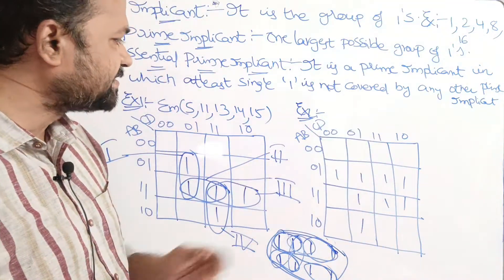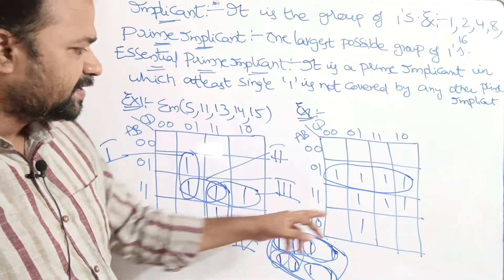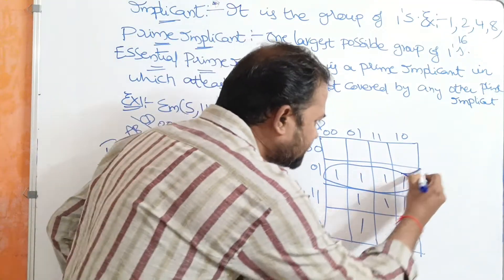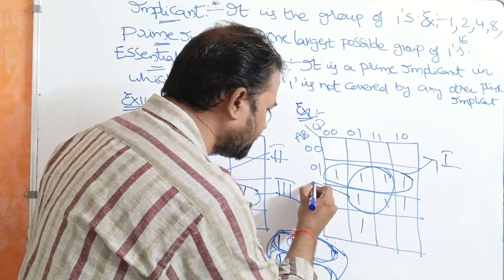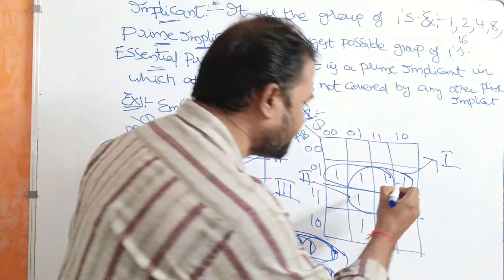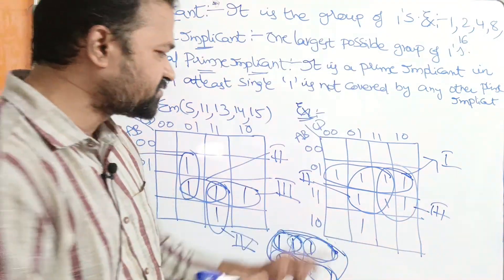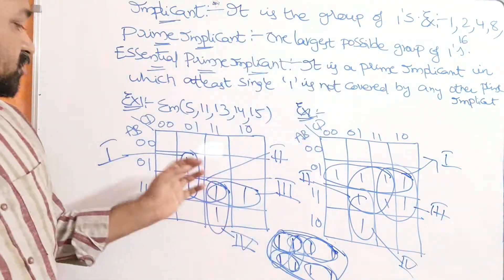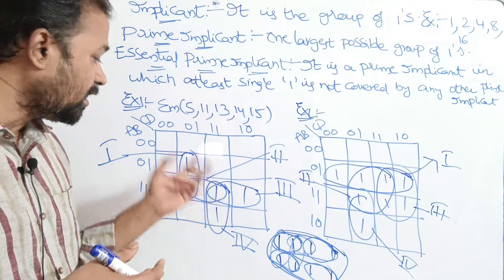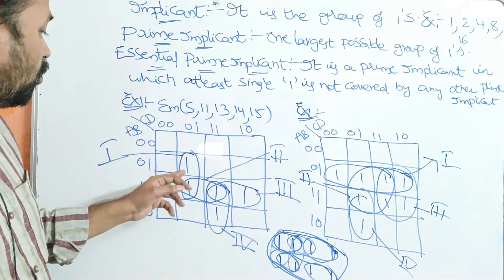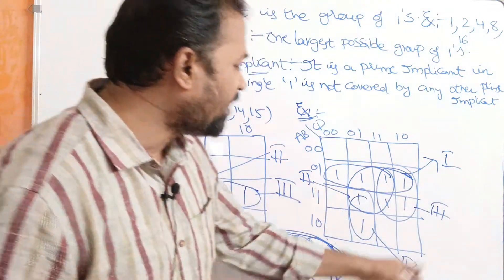Let us take another example where the mapping is already done. In order to cover this one, we can make this the group — this is the largest possible group, let it be group one. In order to cover this one, we can make this the group — the largest possible group, let it be the second group. In order to cover this one, we can make these four cells as the group — the largest possible group, let it be third group. In order to cover this one, this is the fourth group. So in this Karnaugh map we have four Prime Implicants.